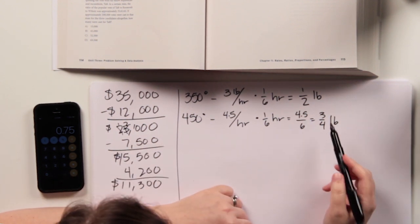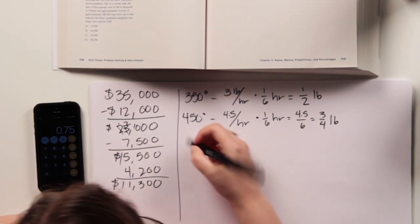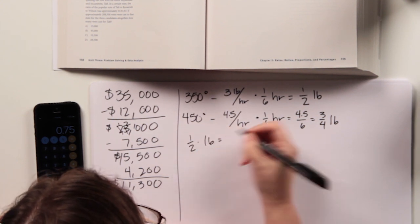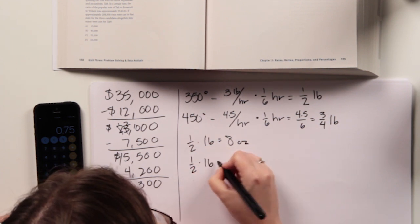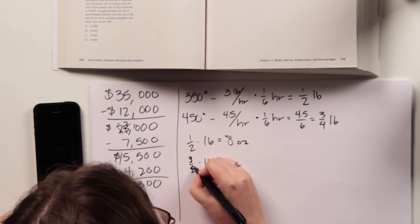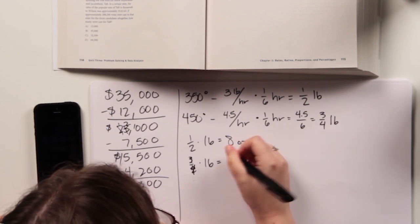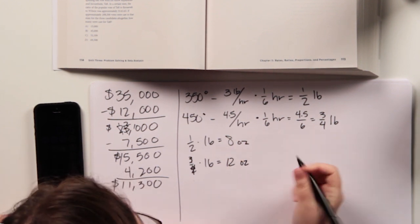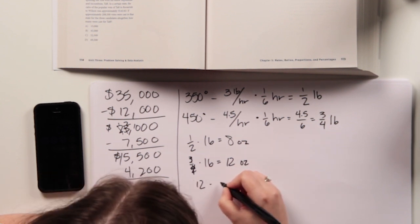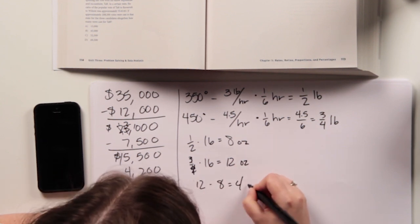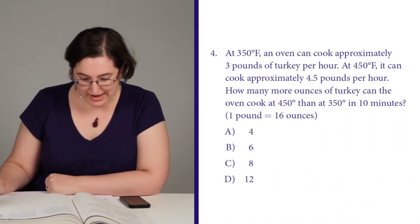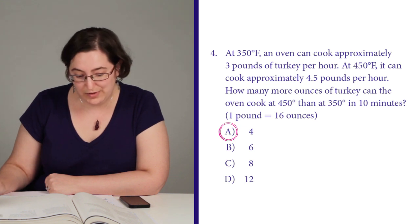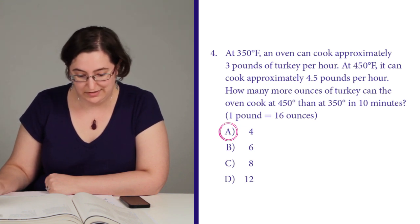So if a pound is 16 ounces, then one half times 16 equals eight ounces, and three fourths times 16 equals 12 ounces. The difference between them is four more ounces at 450 degrees, which is answer choice A. I'm looking at answer choices C and D going — you were waiting to trick me if I didn't think this all the way through, SAT. I'm onto you.